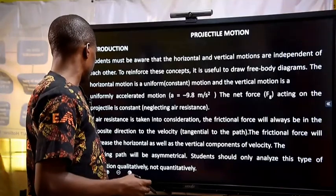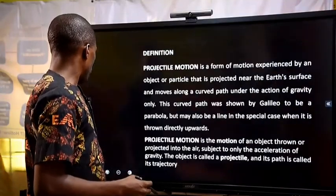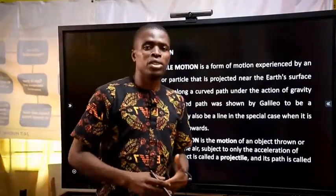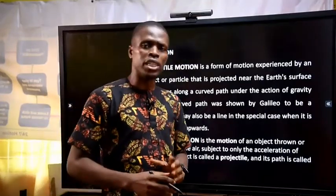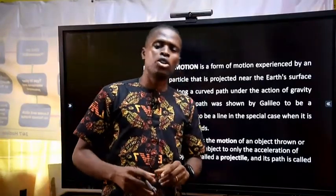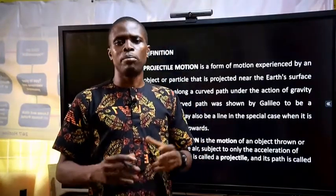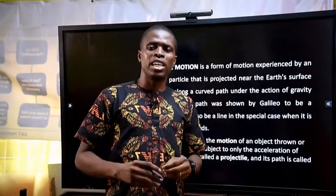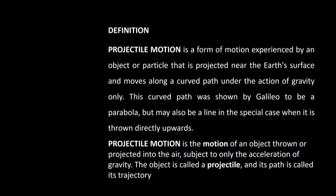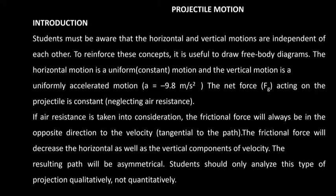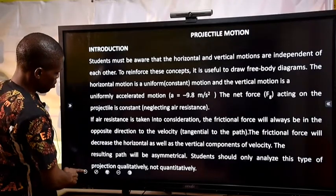What is projectile motion, and what is a projectile? Projectile motion is the motion of an object in which the object travels through a parabolic path. Basically, you say an object traveling through a parabola — a trajectory that is parabolic in nature.